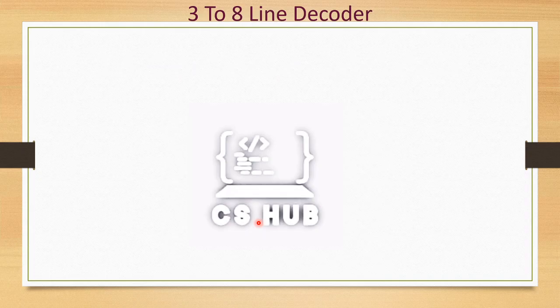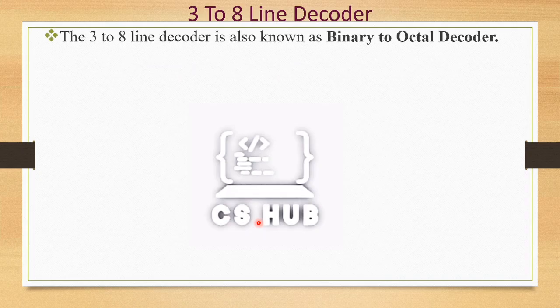Now this is a 3-to-8 line decoder with 3 inputs and 8 outputs. It is also known as a binary-to-octal decoder — binary values are input and the corresponding octal values are indicated at the output. If we input a 3-bit binary value, the corresponding one of 8 outputs becomes active.